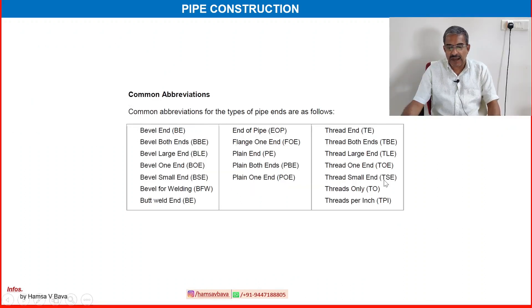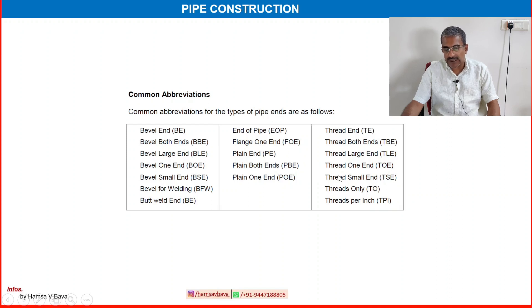Common abbreviations for the type of pipe end are as follows: bevel end, bevel both ends, bevel large end, etc. For plain ends: plain end, plain both ends. For threaded: threaded end, thread both ends, thread large end, etc.